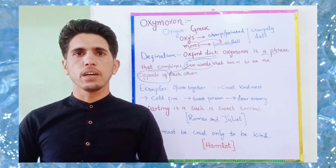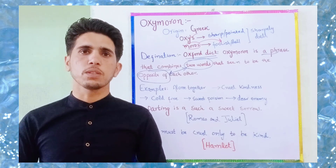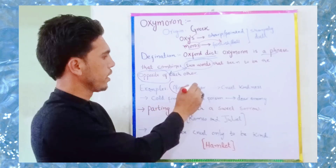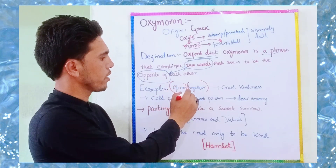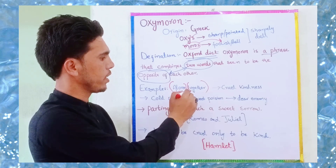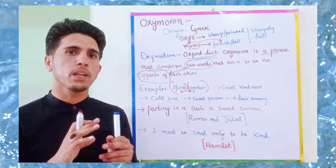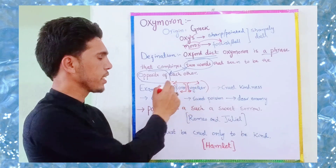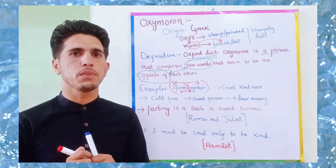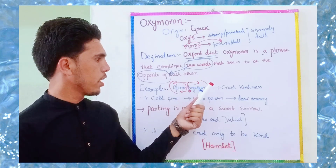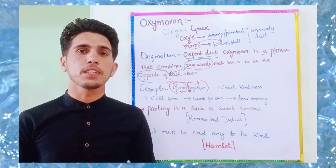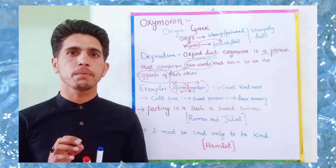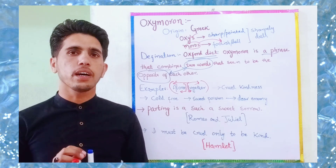Now looking at examples of oxymoron in our day-to-day environment and speeches. The first example is 'alone together.' These two words are different — alone means single and together means a group of people. It means that people are physically present but emotionally distant from each other. Two different words are combined in order to create an effect or stress in the writing, sometimes creating a positive or humorous meaning.